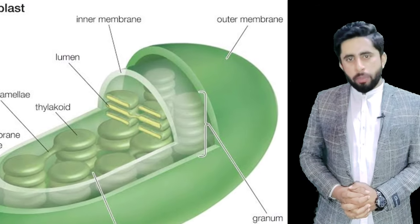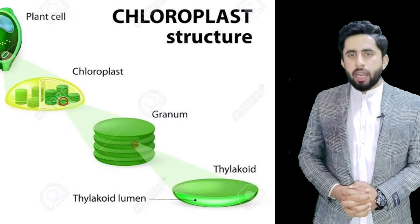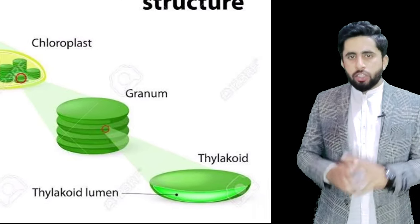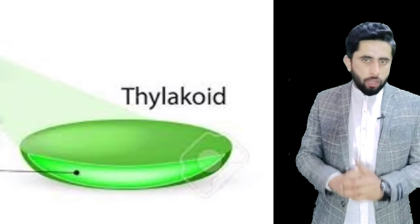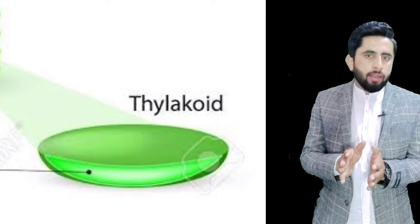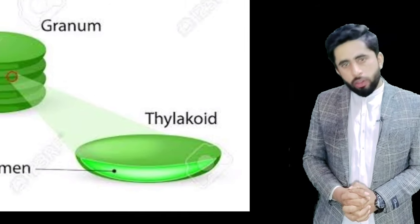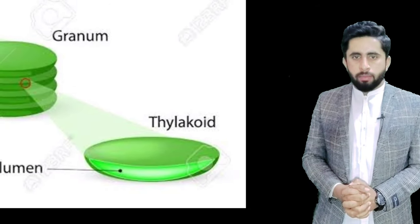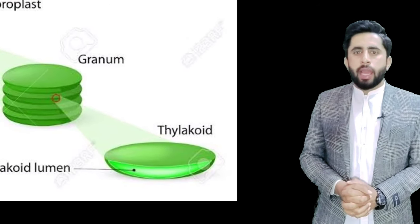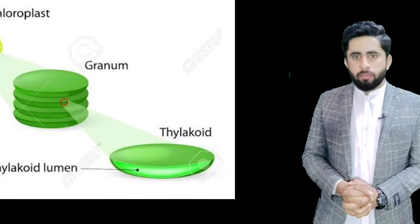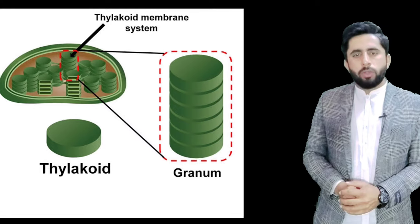Grana مشتمل ہوتے ہیں thylakoids پر۔ Thylakoids بڑی important structures ہیں۔ These are flattened vesicles that are stacked on each other like coins to form a granum. Different grana آپس میں interconnected ہوتے ہیں through a non-green part known as inter-granum. ایک granum کے اندر thylakoids کی تعداد round about 50 ہوتی ہے۔